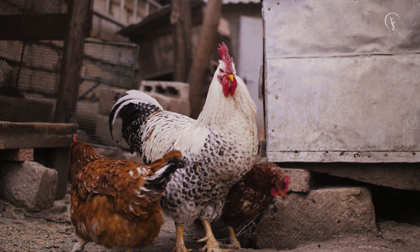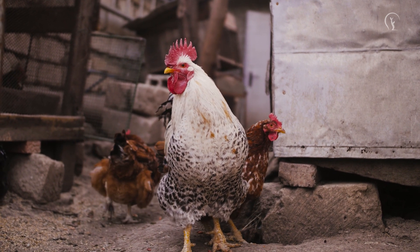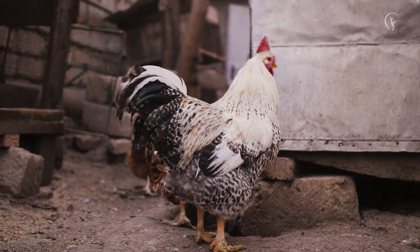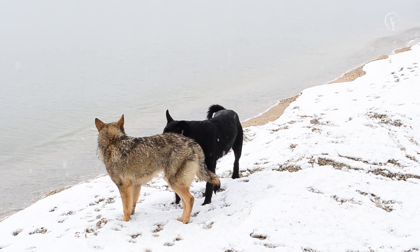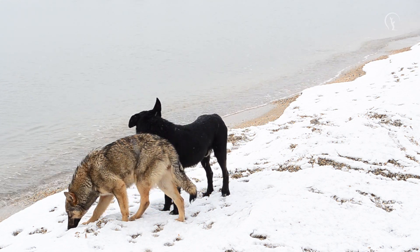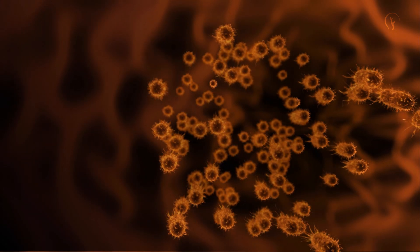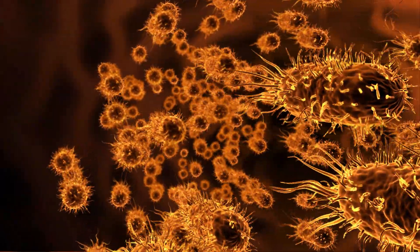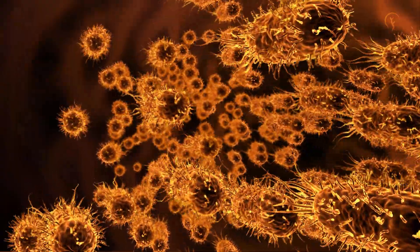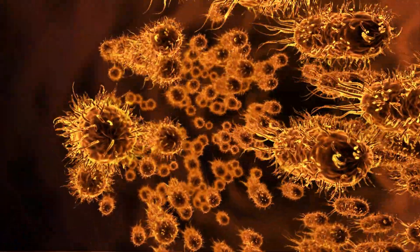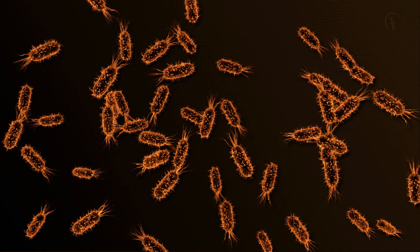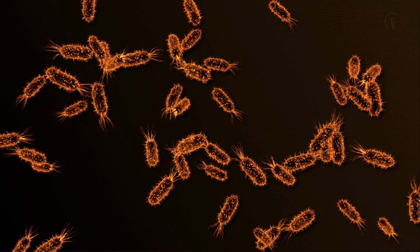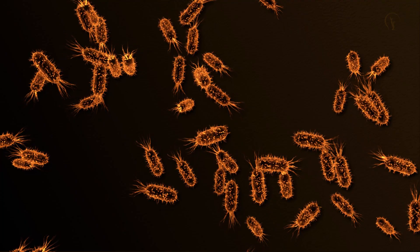The widespread presence of magnetoreception across diverse species, from bacteria to birds, suggests that this ability is not a recent evolutionary development. Instead, it may be one of the oldest sensory systems on Earth, dating back billions of years. One clue comes from magnetotactic bacteria, microscopic organisms that align themselves with the Earth's magnetic field using tiny internal crystals of magnetite. These bacteria use magnetoreception to navigate through water, seeking out optimal environments for survival. Since bacteria represent some of the earliest forms of life, their reliance on magnetic fields hints that this ability could have been present from the very beginning of biological evolution.